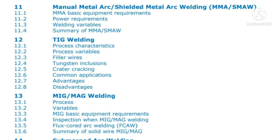Please note we will only cover these four welding processes in this exam. The eleventh topic is SMAW — manual metal arc or shielded metal arc welding — where we look at equipment requirements, power requirements, and welding variables. The twelfth topic is TIG welding, covering equipment requirements, filler wire, function, and its advantages and disadvantages.